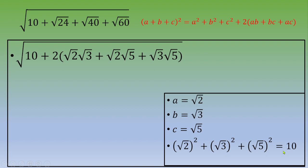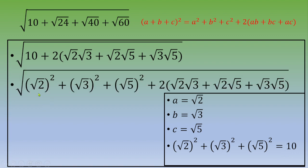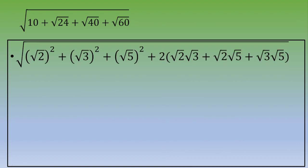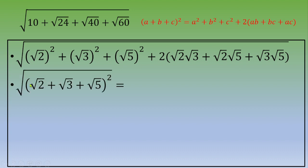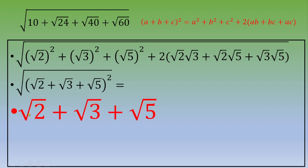Now we can plug everything under the root. Thanks to this remarkable identity, the entire expression under the root is square root of 2 plus square root of 3 plus square root of 5, all squared. So the final answer is simply square root of 2 plus square root of 3 plus square root of 5.